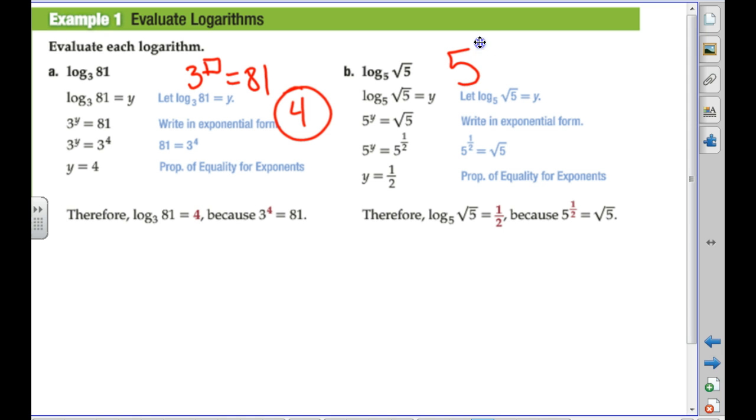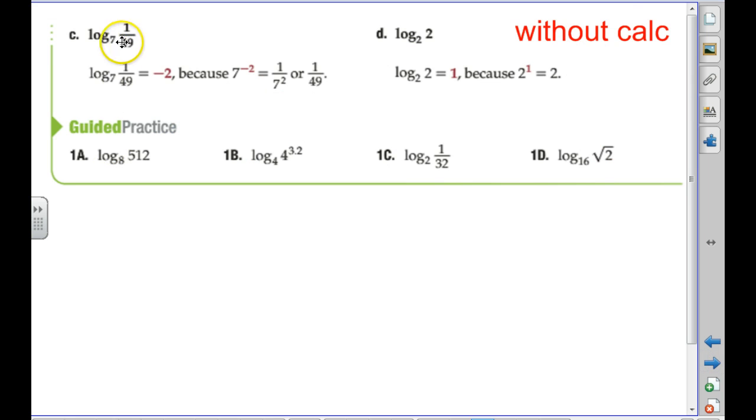What power is this? 5 to what power equals the square root of 5? Remember we talked about those yesterday? Square root is 1 half power. 7 to what power is 1 over 49? Well, 49 is 7 to what power? So, 49 is 7 squared, but what puts it down in the denominator is making it negative. So, this is 7 to the negative 2. And log base 2 of 2 means 2 to what power equals 2? So, the power is 1.